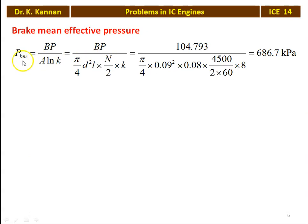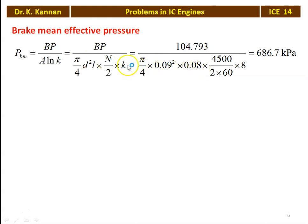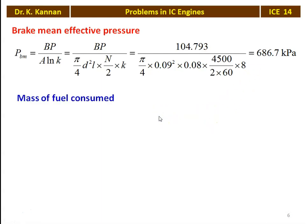The brake mean effective pressure: BMEP = BP / (A × L × n × K), where A = π/4 × d², n = N/2 for 4-stroke, K = number of cylinders. Substituting: 104,793 / (π/4 × 0.09² × 0.08 × 4000/2/60 × 8) = 686.7 kPa. The mass of fuel consumed: MF = 4.4 / (10 × 60) = 7.33 × 10⁻³ kg/s.